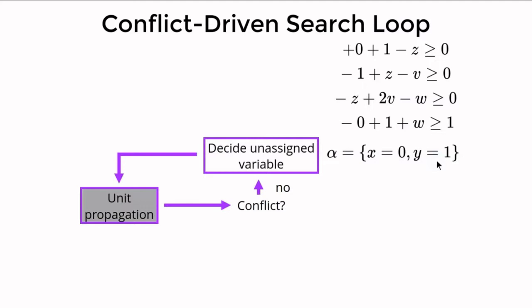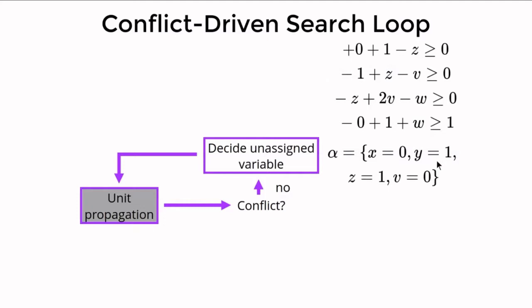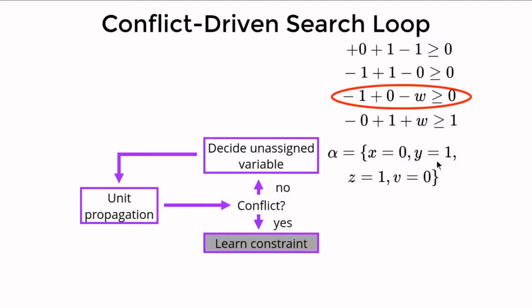This time the second constraint can only be satisfied if z is one and v is zero. We extend the partial assignment and simplify the constraints. This leads to a conflict — the third constraint is falsified by alpha. Here is where the magic of conflict-driven search happens: from each conflict it learns an implied constraint that would have prevented this conflict from occurring in the first place.